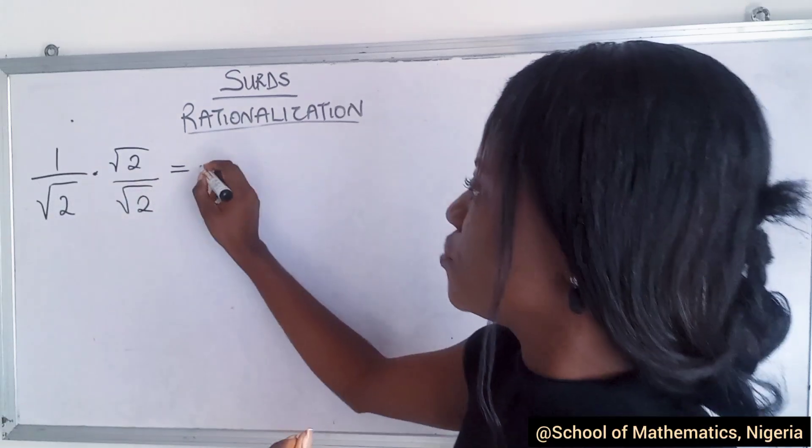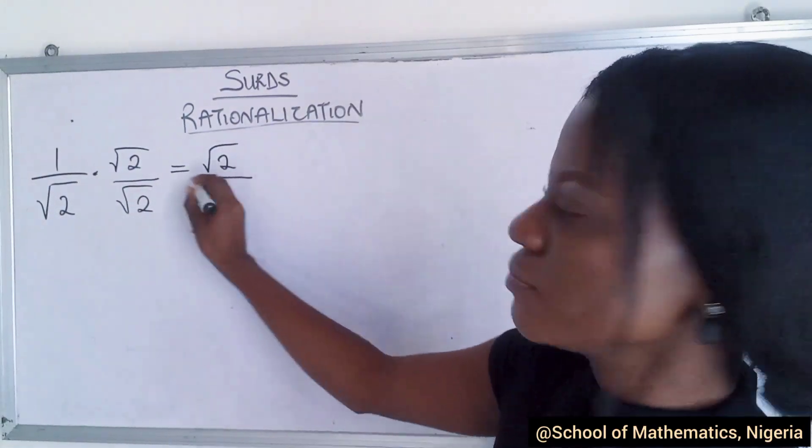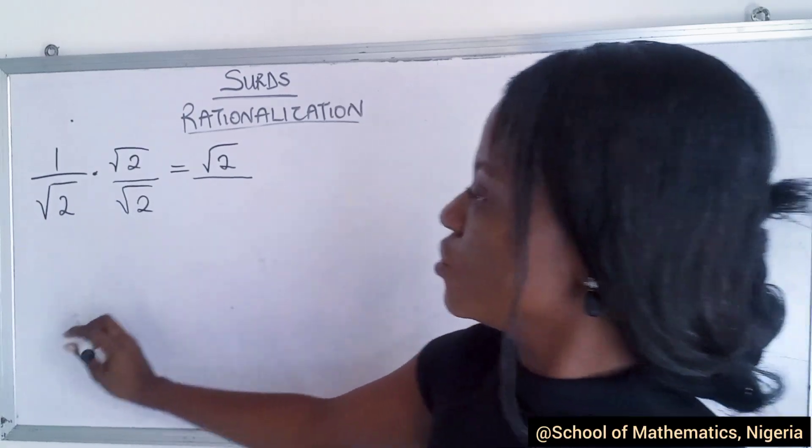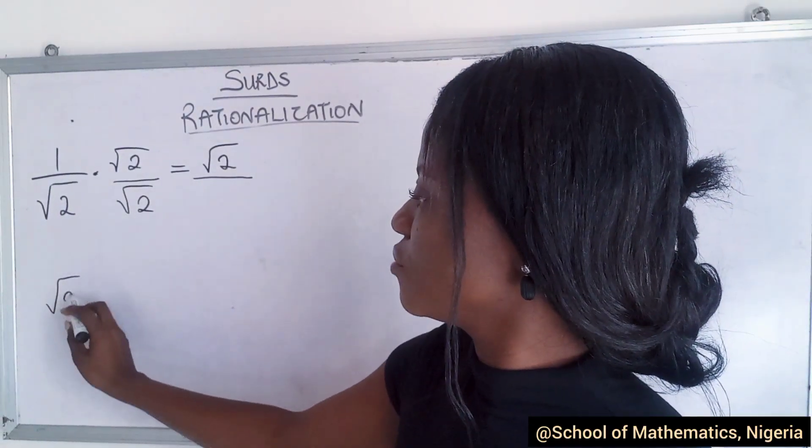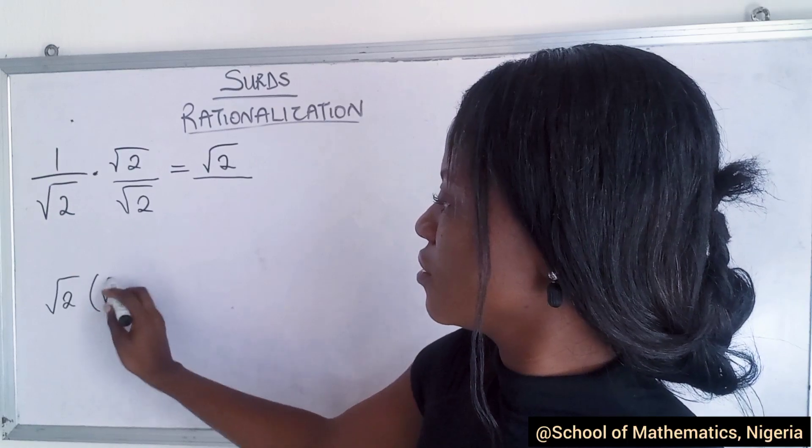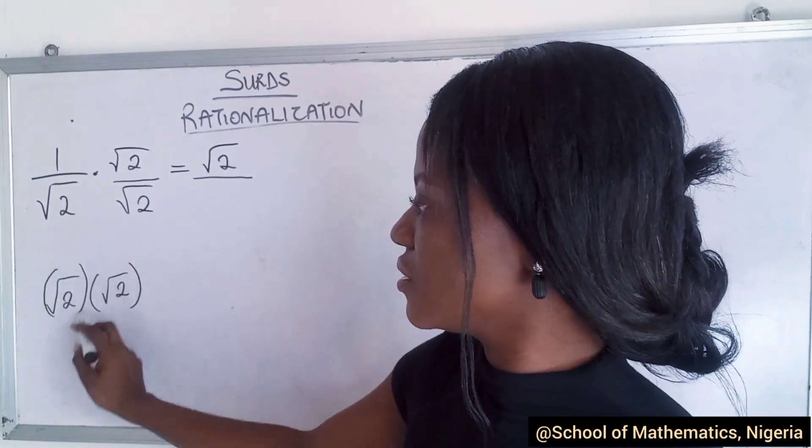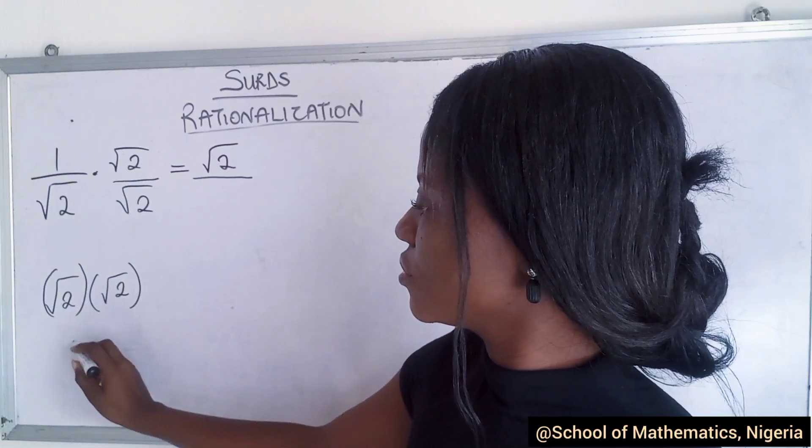And then this times this. Now in mathematics, you know that roots times the other roots, so long as the value in it is the same, what happens? It becomes the square.